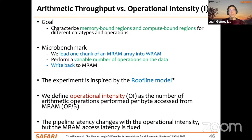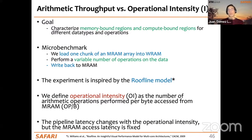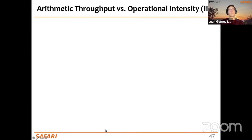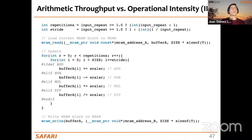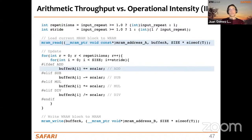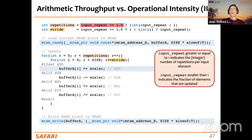We vary the number of operations performed on the data — changing the operational intensity across experiments — while keeping the MRAM transfer size fixed, so MRAM access latency is constant. In the microbenchmark, you can see the MRAM read transferring data into WRAM, followed by the arithmetic operation (one addition in this example), and then the MRAM write. Two for-loops control what the operational intensity is — how many operations we perform on the values in WRAM.